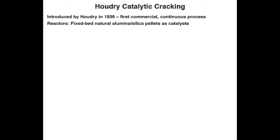But for commercial operation, you would need a flow reactor system. So Houdry cat cracking was the first commercial continuous process, introduced in 1936. The process used natural alumina silica solid particles as catalysts, and we're going to look at a configuration that has three reactors in parallel.